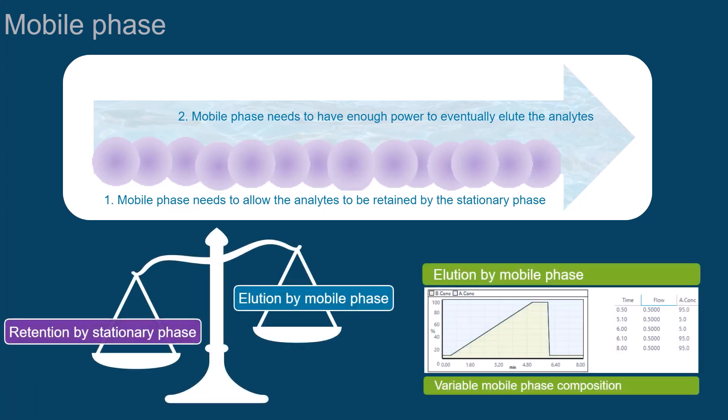In most cases, a gradient elution mode is required to achieve this balance. We will discuss an example using the reversed-phase chromatography separation mode in a moment.